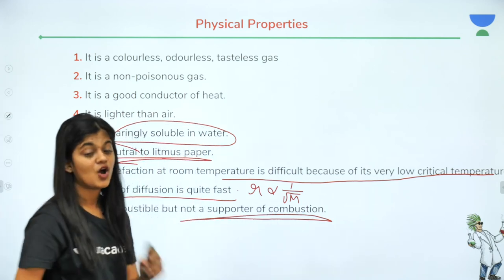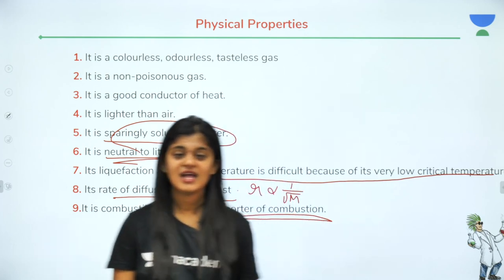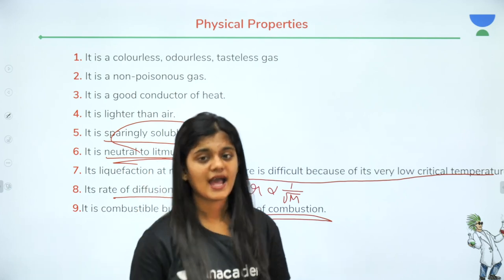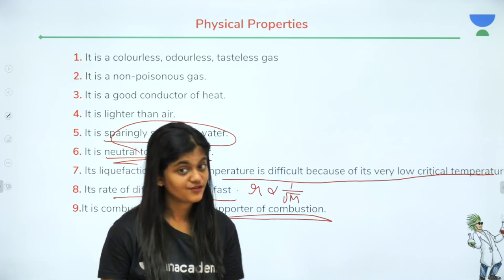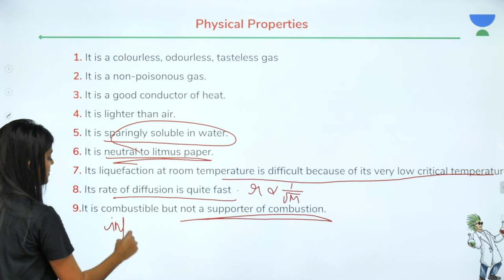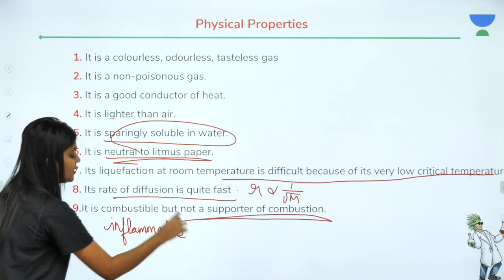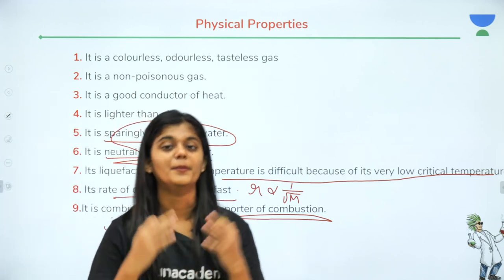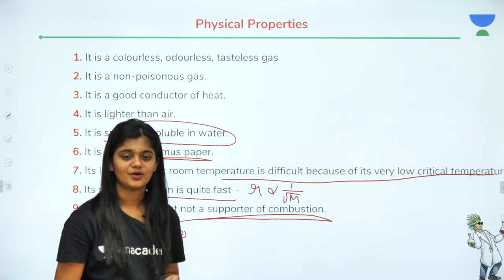Oxygen is a supporter of combustion, but hydrogen's property is that it is combustible — if you expose it to air it will easily catch fire; we call this 'inflammable.' However, hydrogen is not a supporter of combustion — it does not help in the burning process. Only oxygen helps in burning.